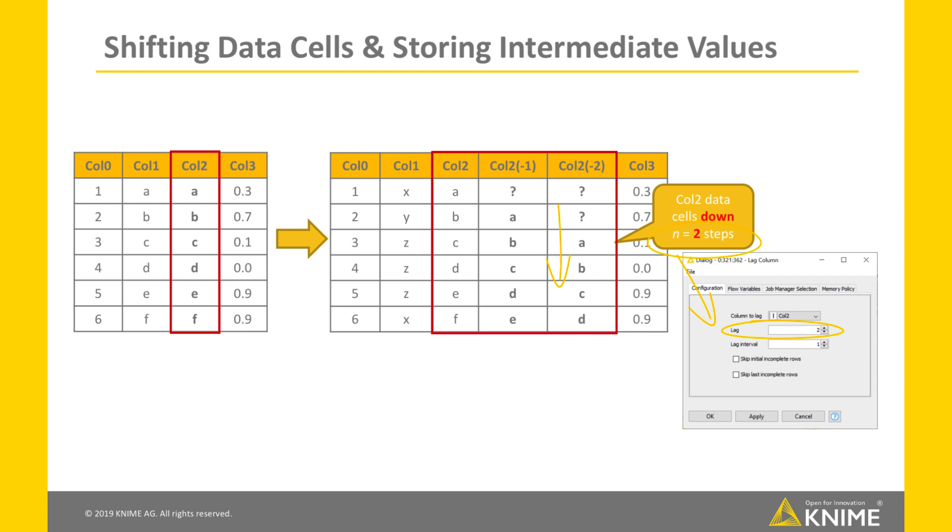Additionally, this time, as many copies of Column Col2 are made as there are intermediate steps between the value of parameter Lag and 0. Then the data cells in each column copy are shifted down the corresponding number of steps. In this case, the only intermediate step between 0 and 2 is 1, so we have one additional copy of Column Col2, and in this additional copy, the data cells are shifted down one step.